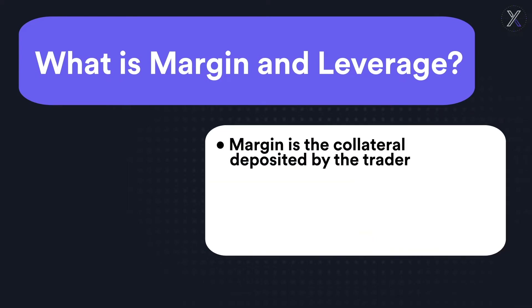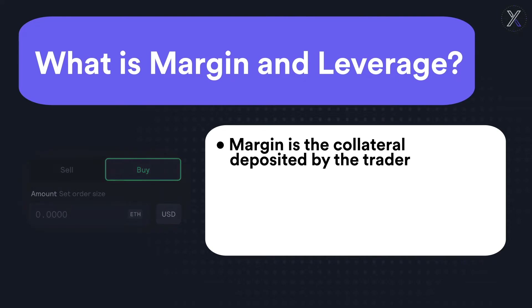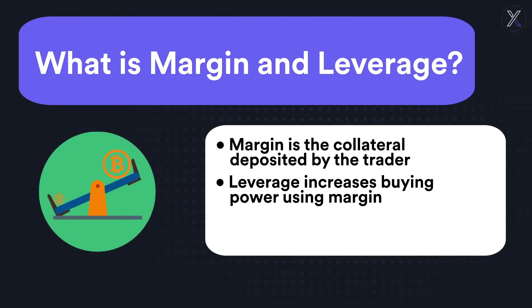Margin is the collateral deposited by the trader to cover the risk of your derivative positions. On DYDX, this collateral is held as USDC, displayed as USD on the platform as it's redeemable one-to-one for US dollars. Leverage gives traders the ability to increase exposure to a market by allowing you to take a position with a collateral level lower than the purchase price.